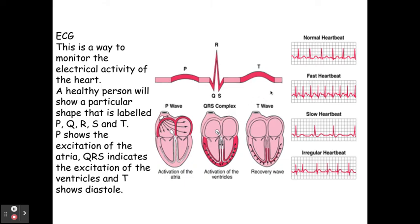For example, comparing a normal heartbeat to a slow heartbeat: the slow heartbeat has fewer QRSs, there is a longer time between the T wave of one heartbeat and the P wave of the next, but the QRSs still have the same amplitude — meaning they still have the same height. That's what we mean by a comparison.